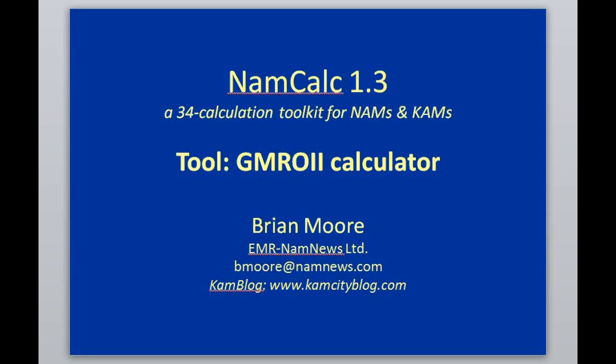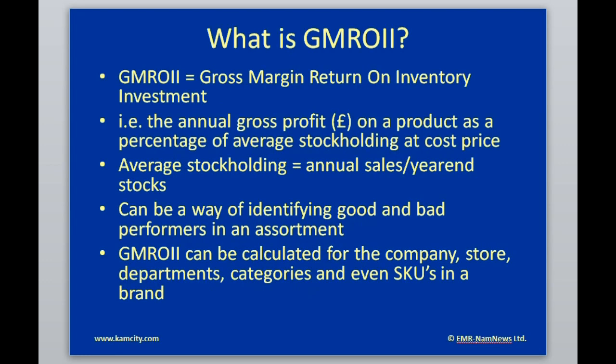This tool is aimed at helping you calculate GIMROI, probably the most important calculation in the entire toolkit. GIMROI stands for Gross Margin Return on Inventory Investment, which means gross margin — the difference between buying-in and selling-out price, excluding tax — as a reward for the money put at risk in holding stock.